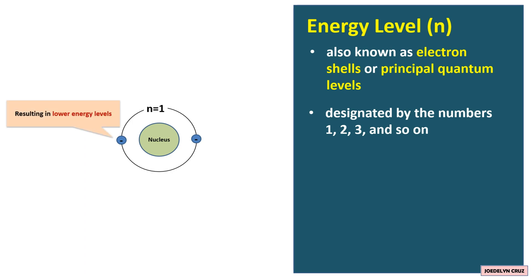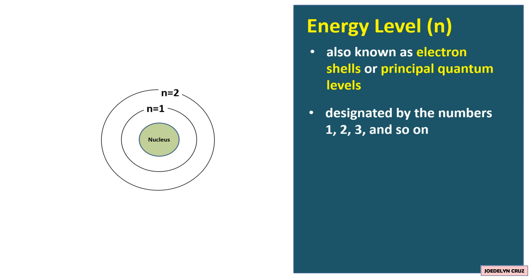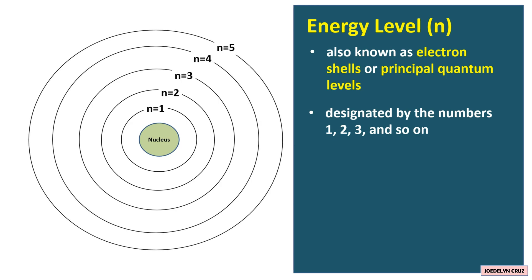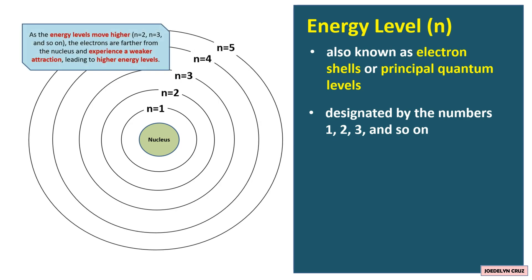Electrons in the first energy level experience a stronger attraction to the positively charged nucleus, resulting in lower energy levels. This is the second energy level, third, fourth, and fifth. As the energy levels move higher — N equals 2, N equals 3, and so on — the electrons are farther from the nucleus and experience a weaker attraction, leading to higher energy levels.